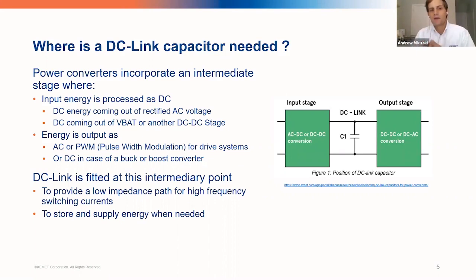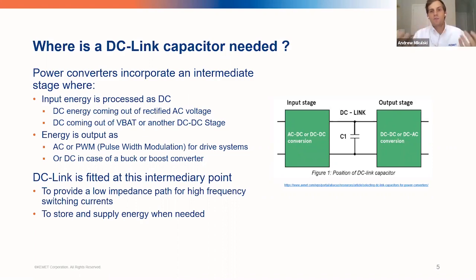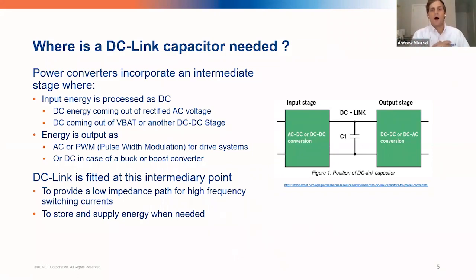The DC link capacitor provides two major benefits. The first is it provides a low-impedance path for high-frequency switching currents. Second, if there's any droop in power or current, it will store and supply energy when needed so that there will be a more constant input into the output stage.